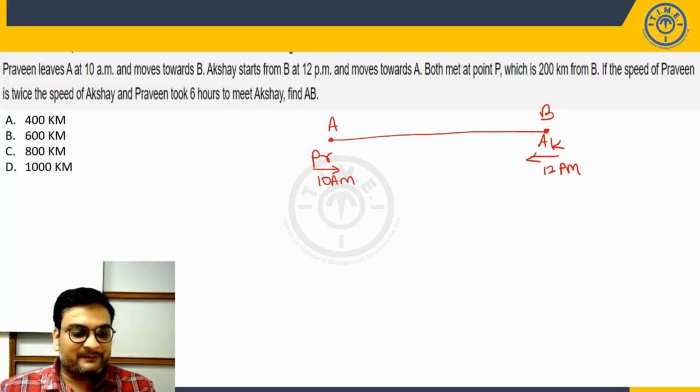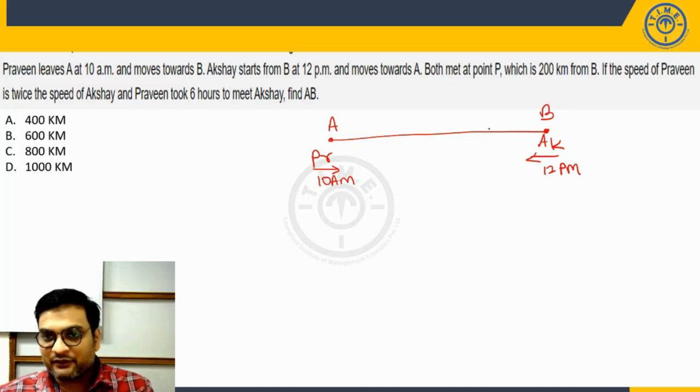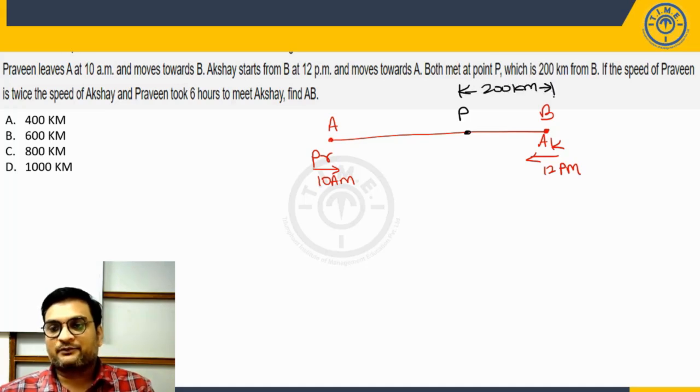Both met at a point P which is 200 kilometers from B. This is 200 kilometers from B.